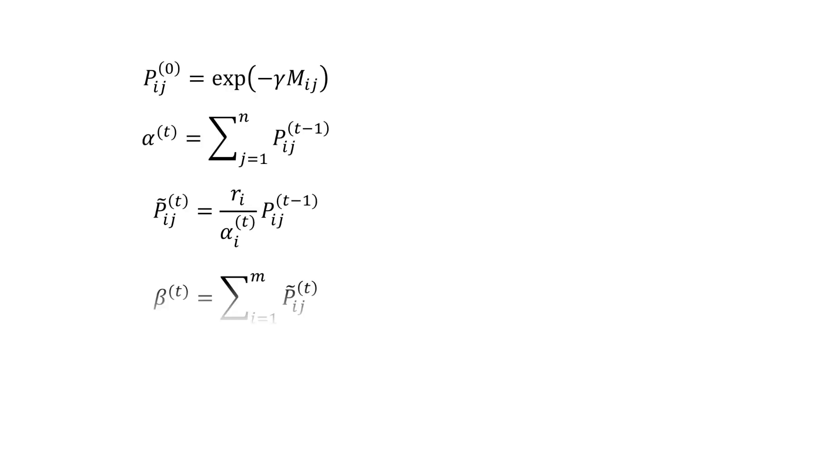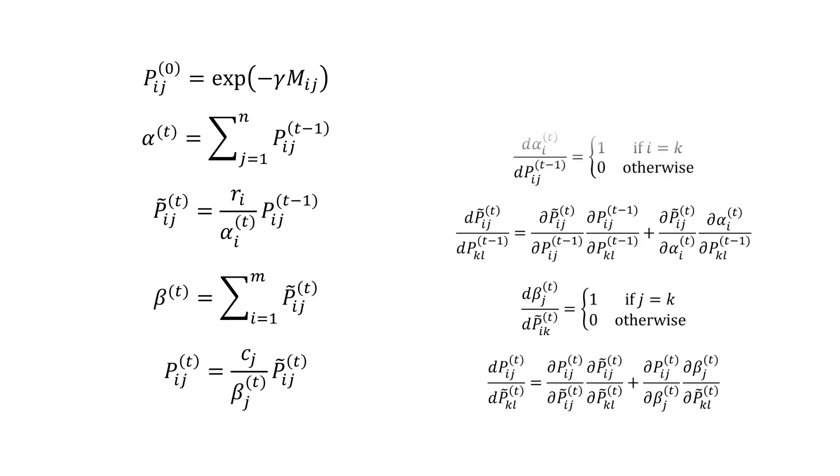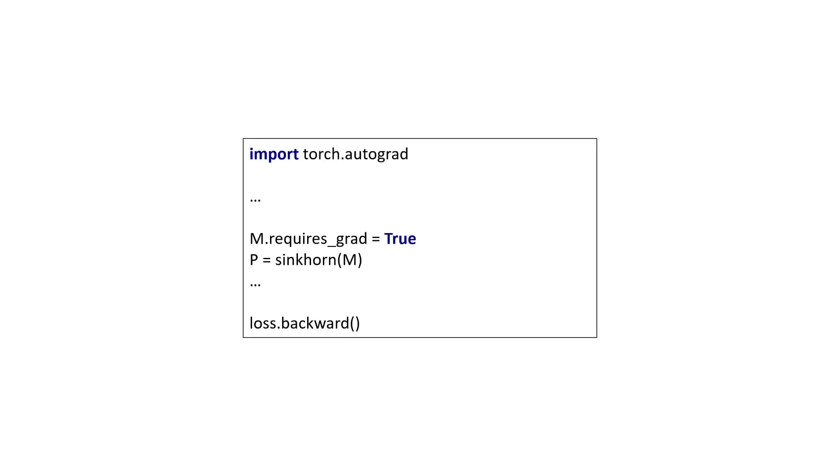Given that we have a simple iterative algorithm for computing the solution, one way to backpropagate gradients is to simply unroll the algorithm and apply the chain rule backwards through the iterations. This is exactly what automatic differentiation will do in PyTorch. Calling our Sinkhorn function on a matrix M with requires_grad equals true does the trick. A downside of this approach is that all the intermediate calculations need to be remembered in the forward pass, which may be prohibitive for large problems.